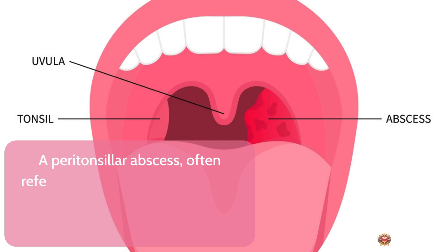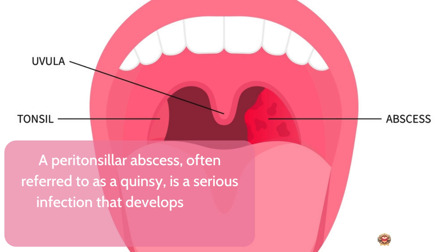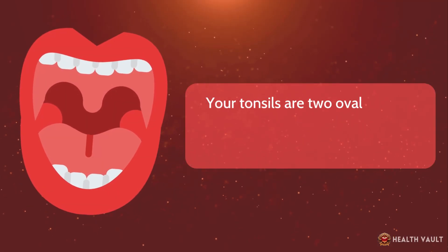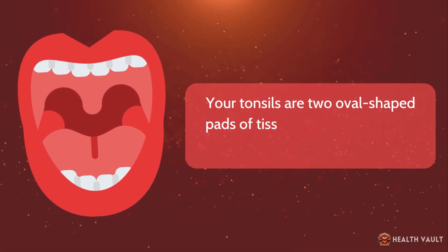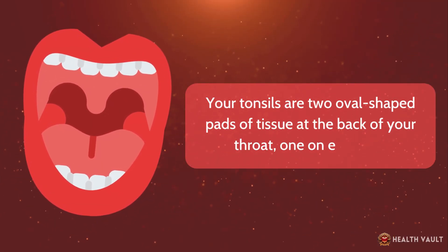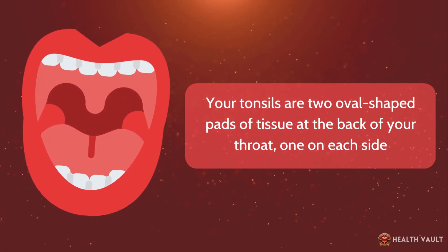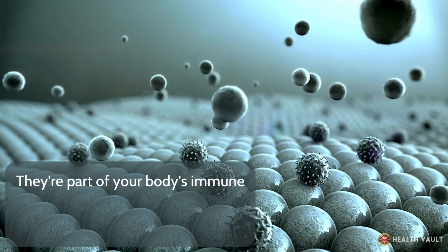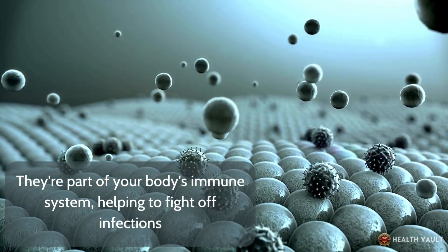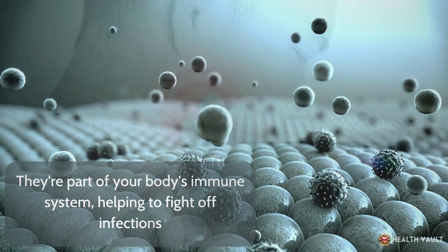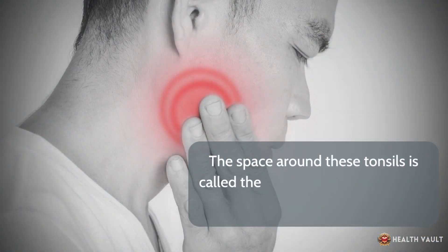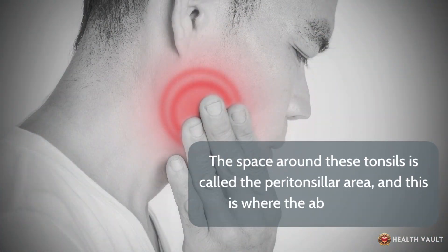A peritonsillar abscess, often referred to as a Quincy, is a serious infection that develops in the tissues around one of your tonsils. Your tonsils are two oval-shaped pads of tissue at the back of your throat, one on each side. They're part of your body's immune system, helping to fight off infections. The space around these tonsils is called the peritonsillar area, and this is where the abscess forms.